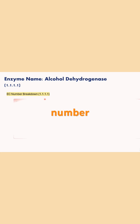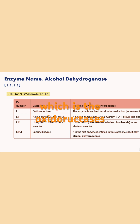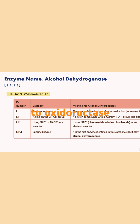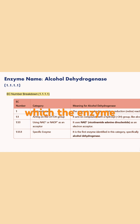Let's break down this EC number. The first '1' means it belongs to enzyme class 1, which is the oxidoreductases. So alcohol dehydrogenase belongs to the oxidoreductase class of enzymes, which are involved in oxidation-reduction reactions. The second '1' indicates the subclass — subclass 1.1 is the class in which the enzyme acts on the alcoholic group.